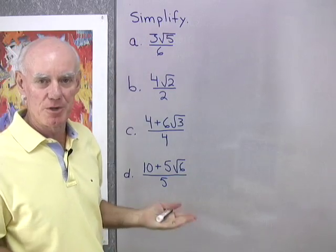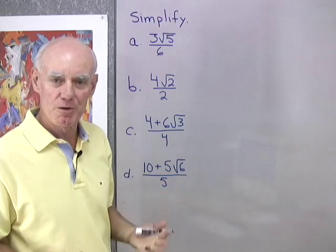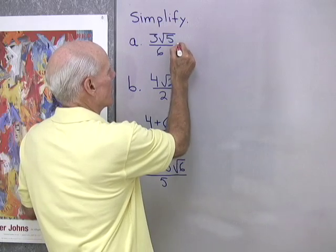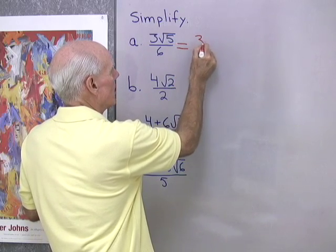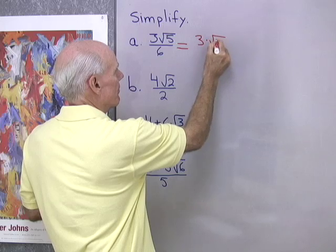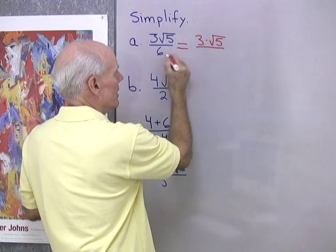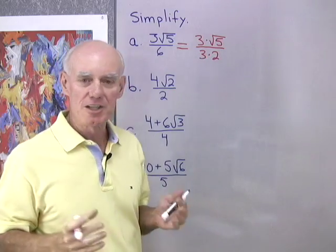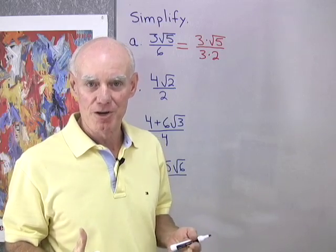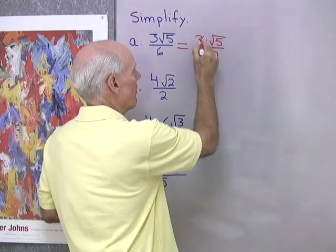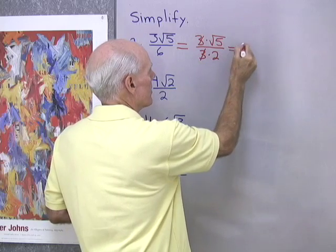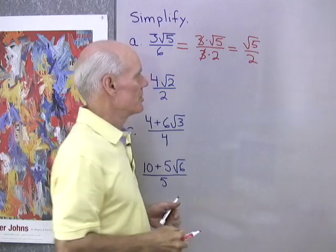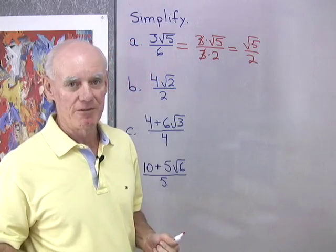I want to simplify this by reducing to lowest terms, and the only way to reduce to lowest terms is to divide out common factors. So I'm going to write this in factored form: 3 times square root 5 — just so you can see that that's multiplication — divided by 6, which is 3 times 2. I can see there's a factor common to the numerator and denominator, I can divide that out, and I end up with square root 5 divided by 2. So the answer to that problem is square root 5 divided by 2.